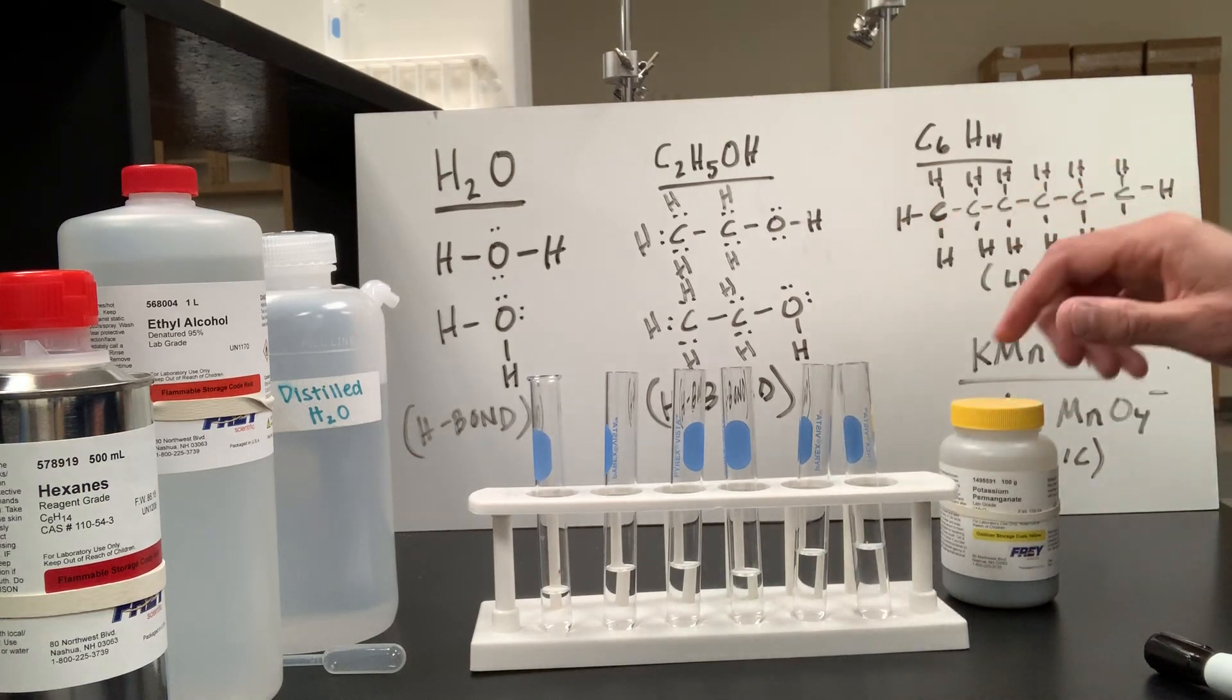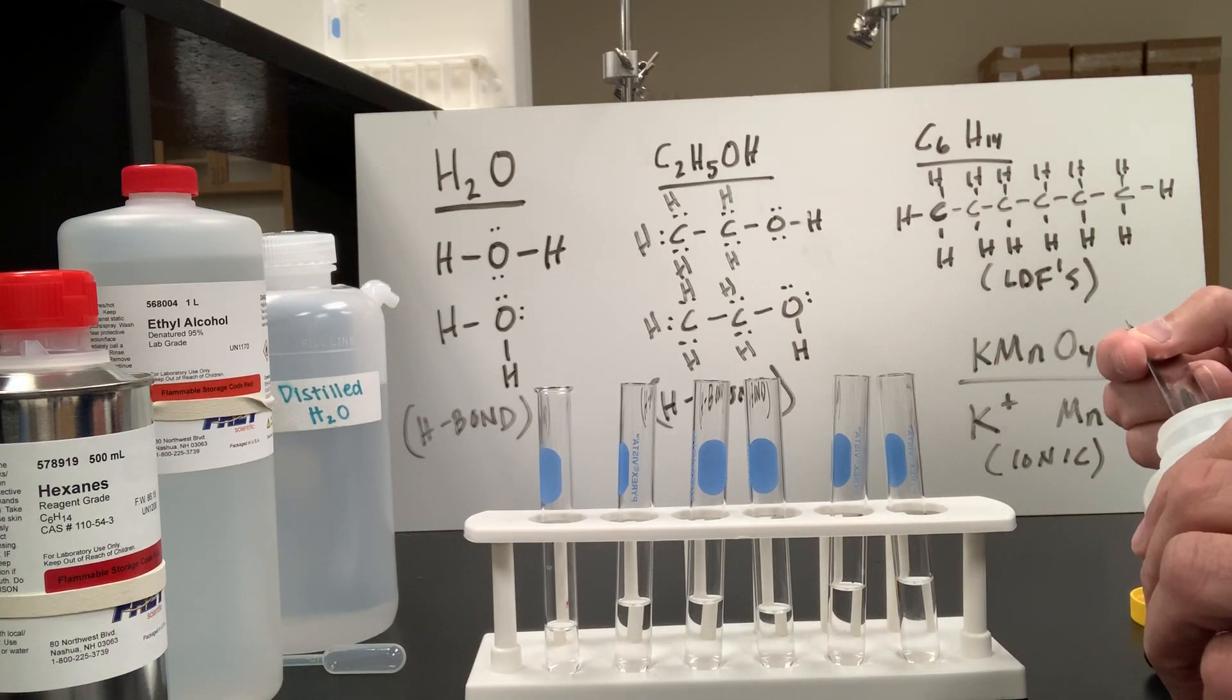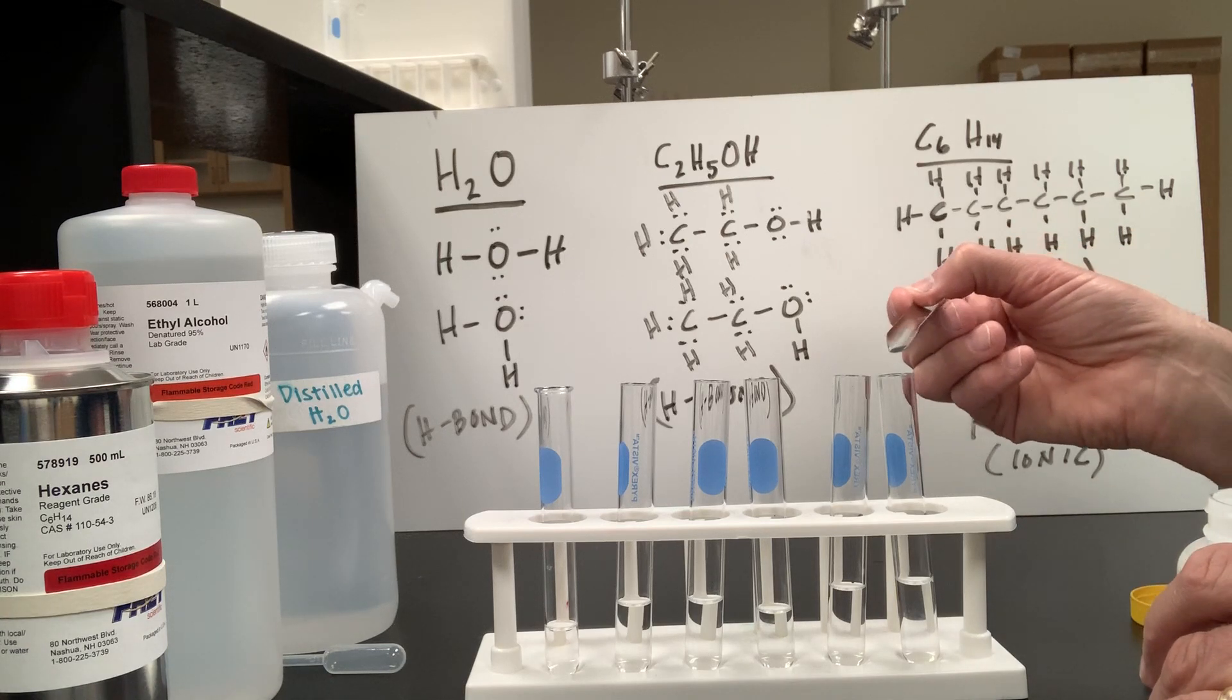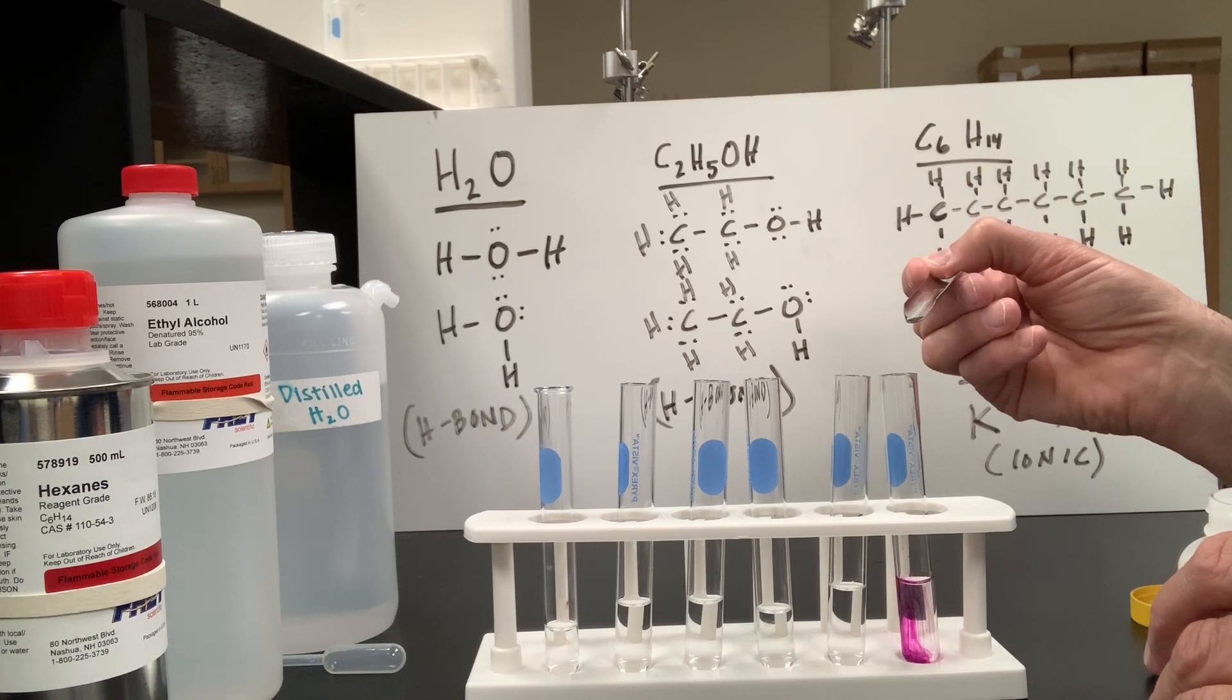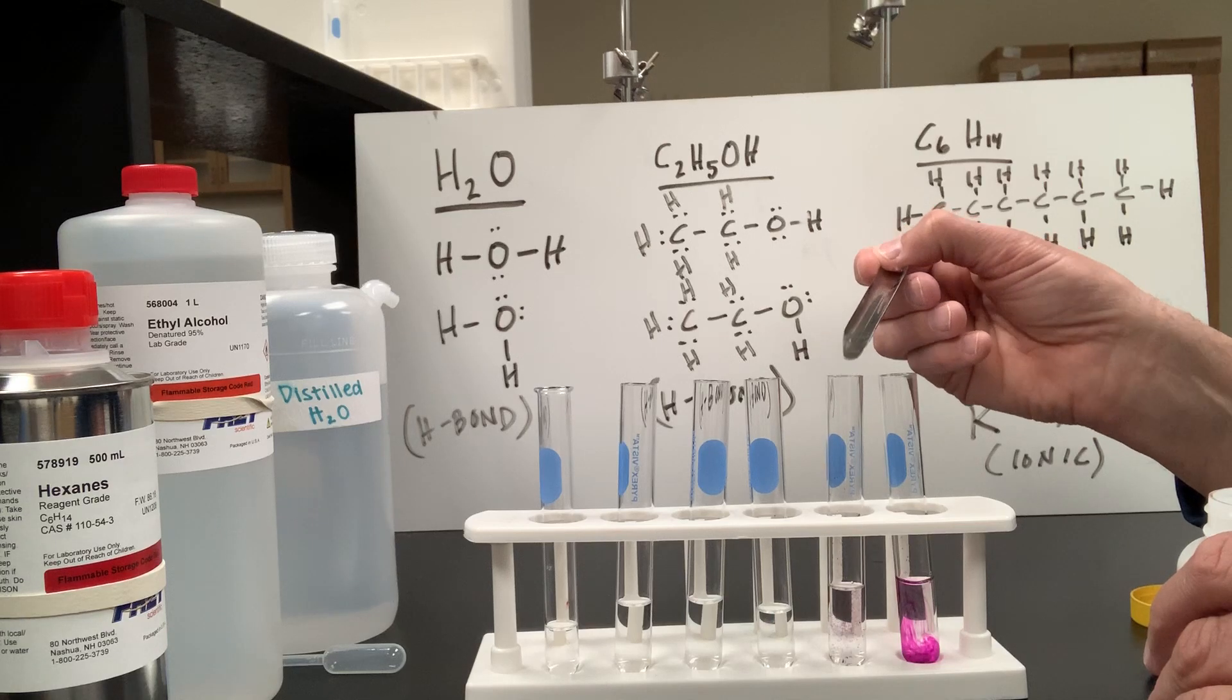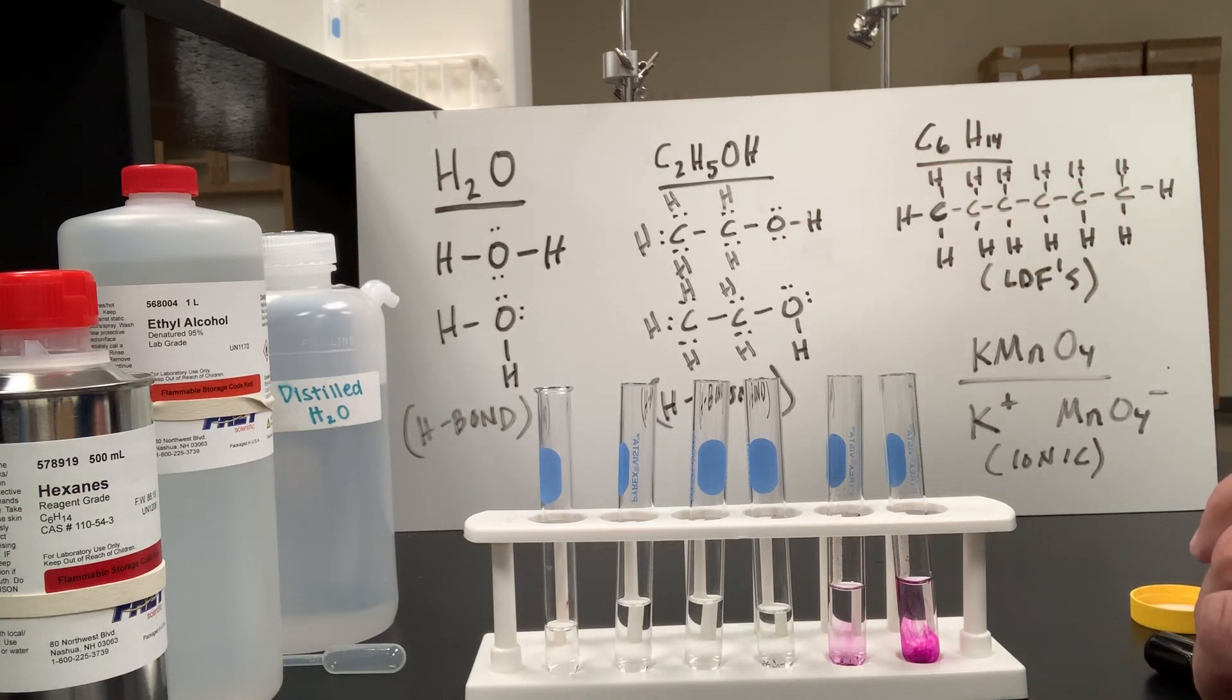Remember, my first test tube has water in it, and we're going to put a little bit of potassium permanganate in each of the first three test tubes to see how the solubility of the ionic compound does in each of these liquids. So here is my water. Let's put a few crystals in there. Here is my ethanol. Put a few crystals in there. And then my hexane with a few crystals.